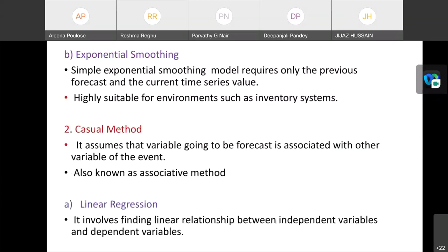Next is exponential smoothing. Simple exponential smoothing model requires only the previous forecast and current time series value. It is highly suitable for environments such as inventory systems. And it's also useful for short range forecasting. In exponential smoothing, the recent observations are given relatively more weight in forecasting than the older observations.